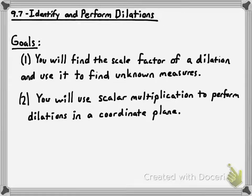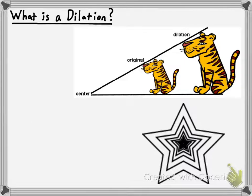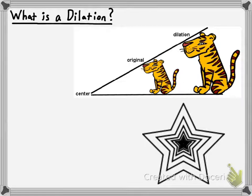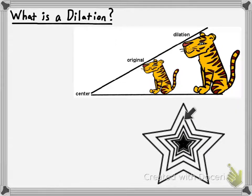Dilations is our focus. Let's talk about what dilations are to begin. This is the last type of transformation that we're learning. A dilation, as you might be familiar with, is when you're changing the size of an object — kind of like when your pupils get dilated, they get larger or smaller. So a dilation is when a figure gets enlarged or reduced in size.